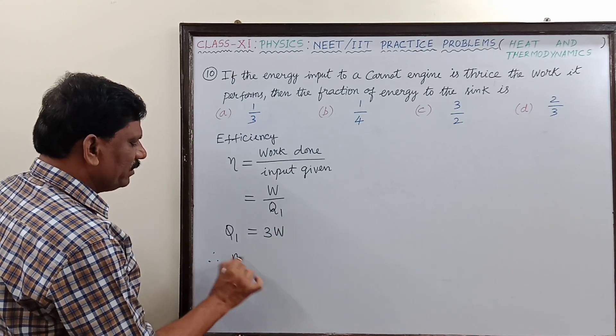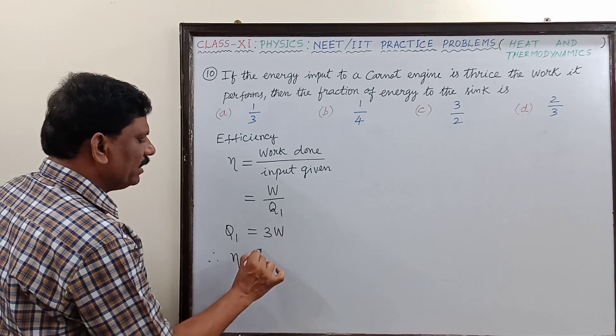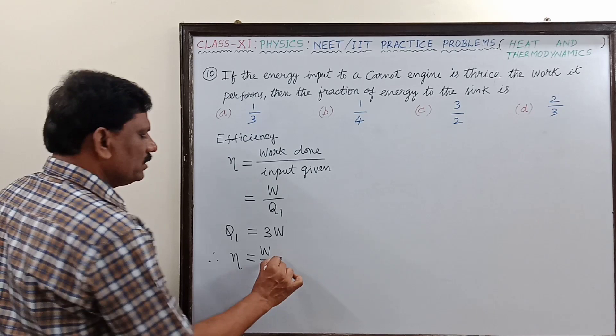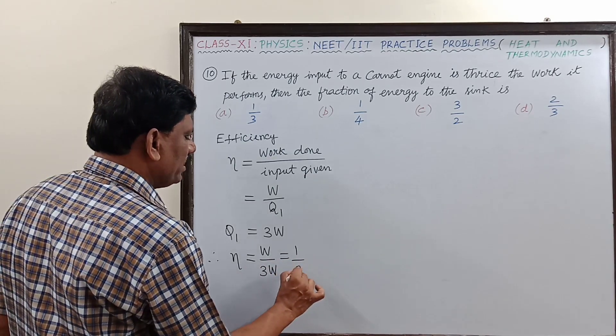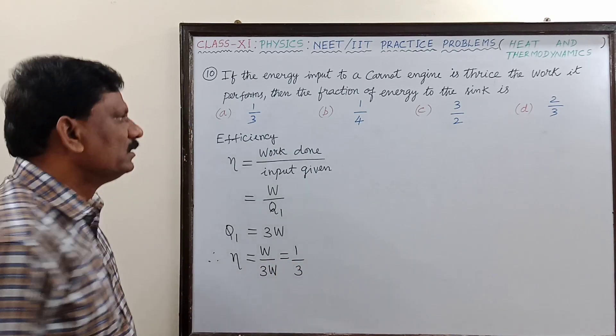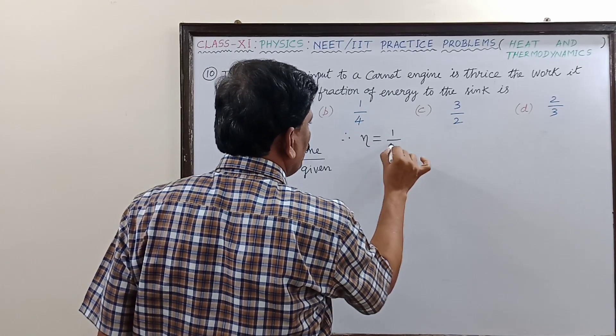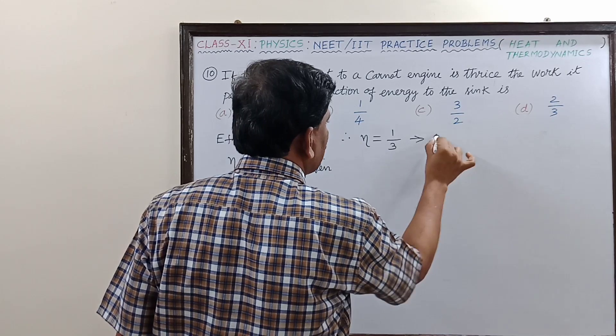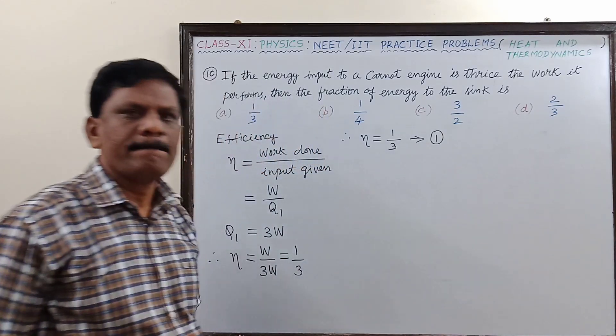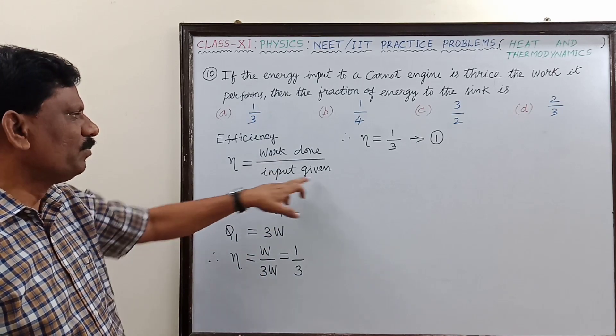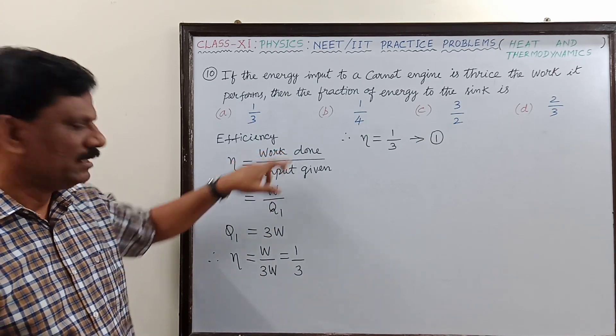Therefore eta is now equal to W divided by 3W, so this is equal to 1 by 3. Therefore the efficiency of the Carnot engine is found to be 1 by 3, so this is the first equation. We are substituting that the input given is thrice the work done, so we have got 1 by 3.